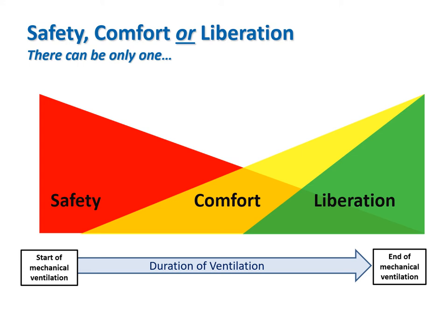Only one goal should be considered the most important at any point in time. Normally, safety is most important at the start of ventilation. But as the patient's condition stabilizes and breathing efforts appear, comfort becomes more important. Finally, at some point, liberation from the ventilator becomes paramount and we may test the patient with a spontaneous breathing trial. If we can identify the primary goal of ventilation, we can more easily select the most appropriate mode—the one with the most robust technical capabilities for serving that goal. This reasoning is no different from selecting the most appropriate drug for a patient.